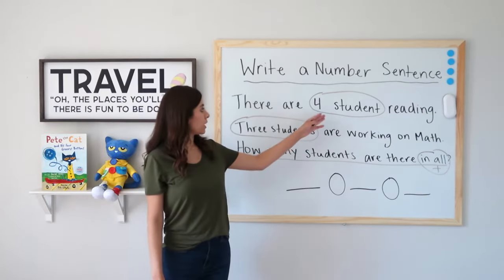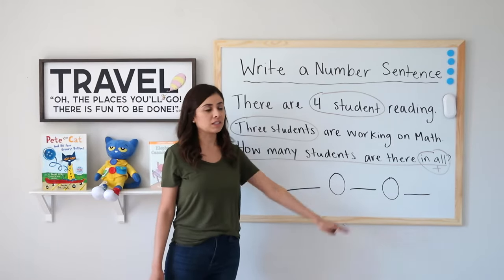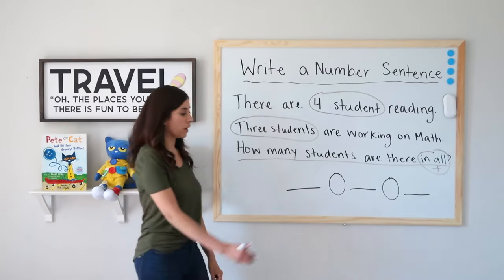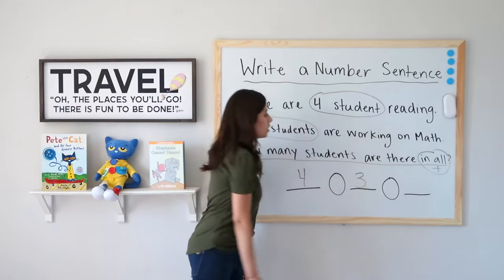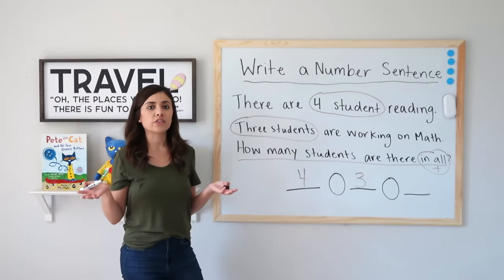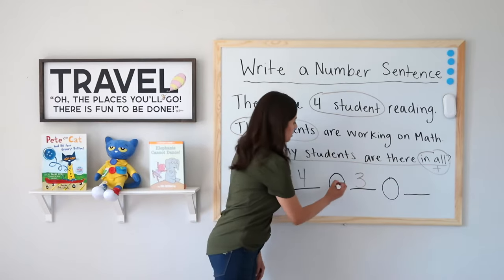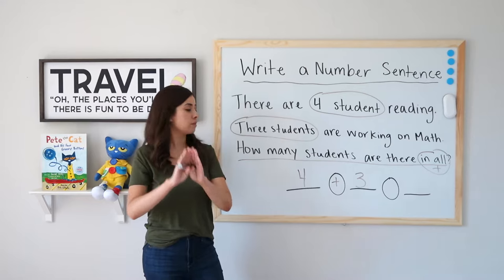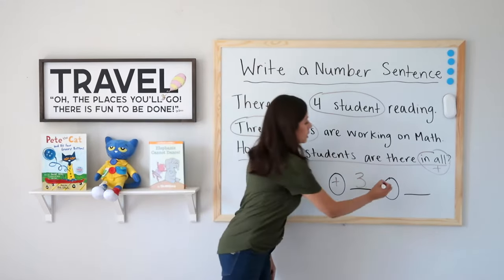So now we're going to write our parts where they belong in our number sentence. I have four and three, so I will write four and three. What am I going to do with four and three? I'm going to add, because I want to take part and part and put them together to make the whole. So I have four plus three equals.